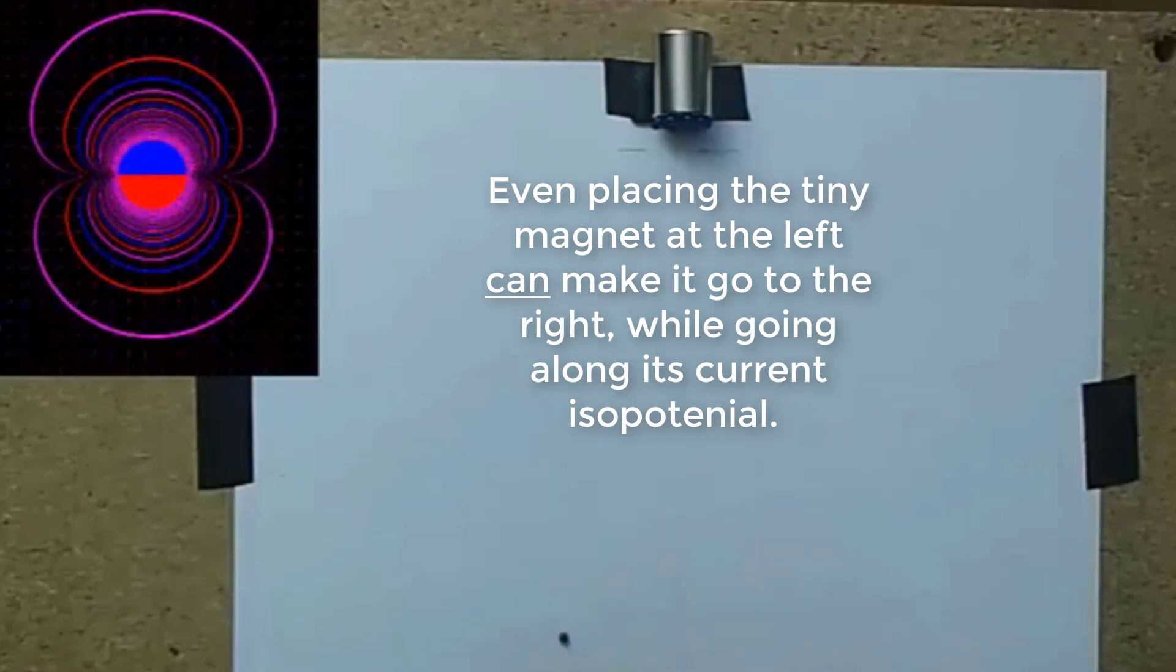Even placing the tiny magnet at the left can make it go to the right while going along its current isopotential.